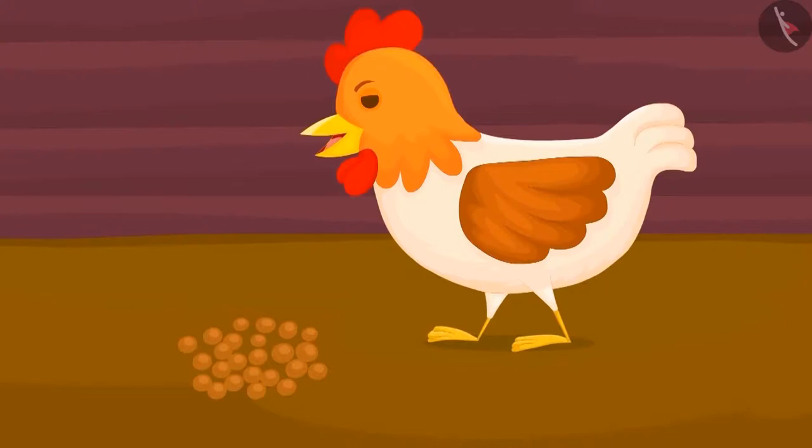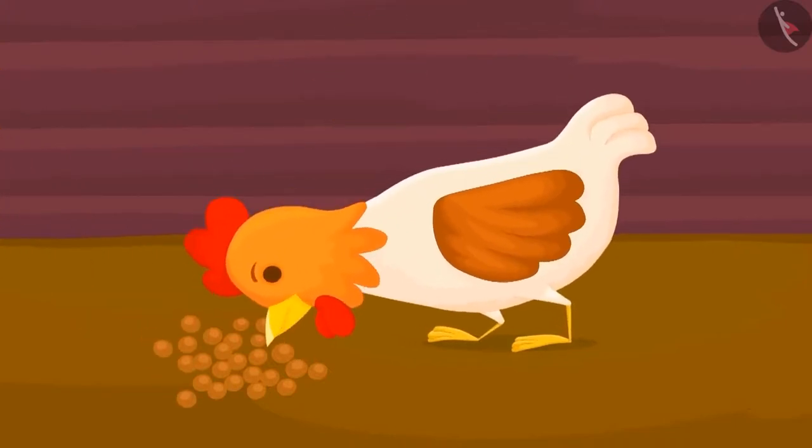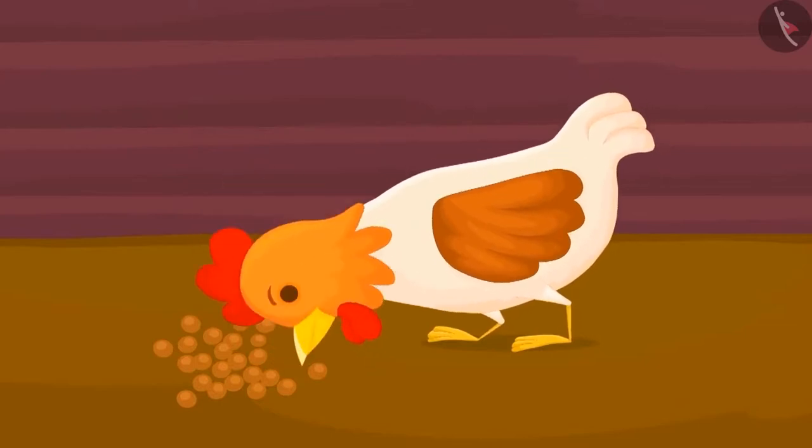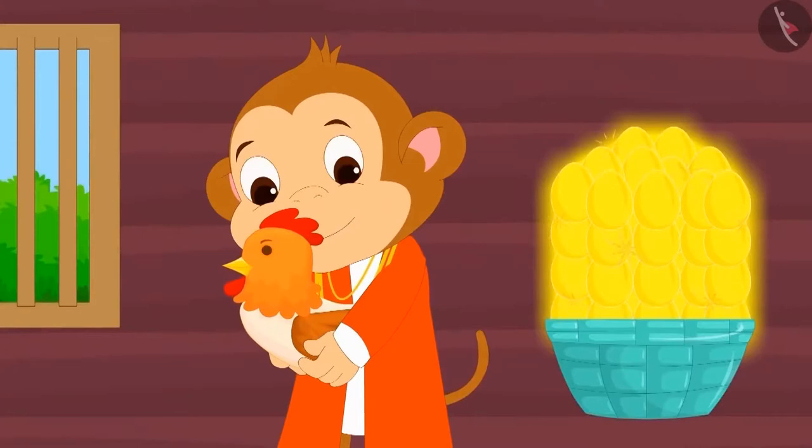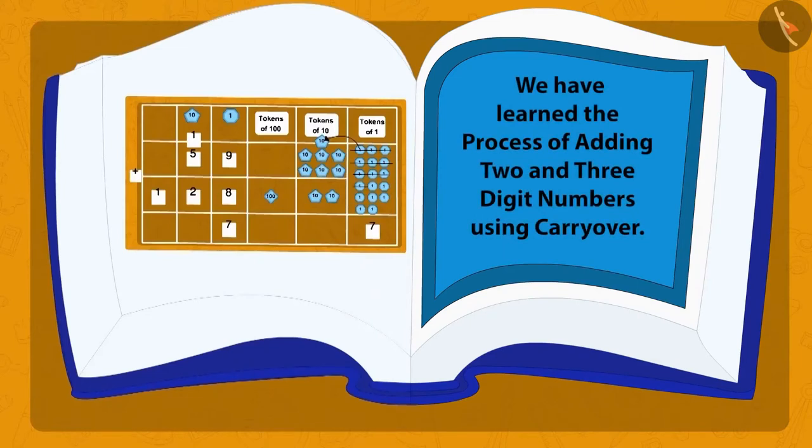Baban now started feeding his hen with fodder. And the hen kept giving him more golden eggs. After all, Baban became the richest man in the village. Children, in this lesson, we have learned the method of adding two and three digit numbers using the carry over method.